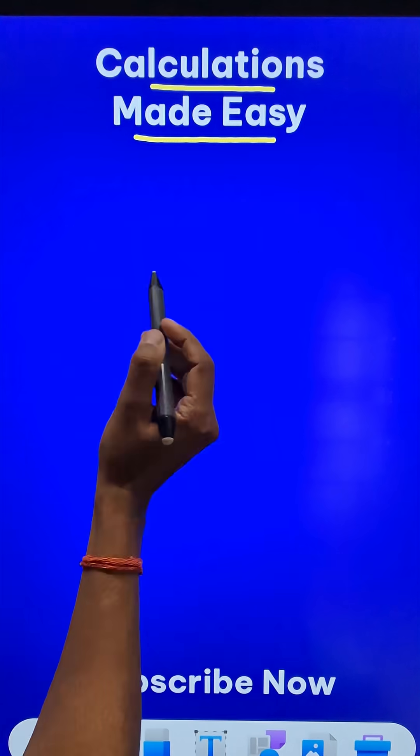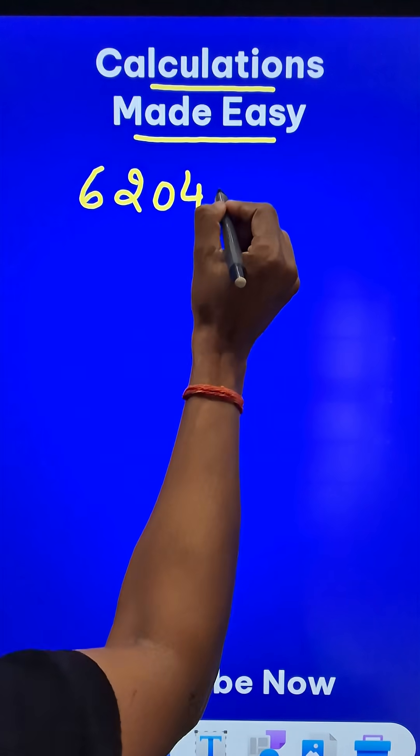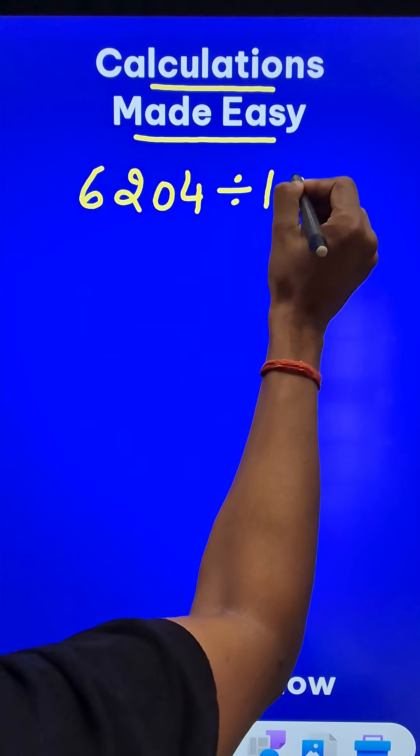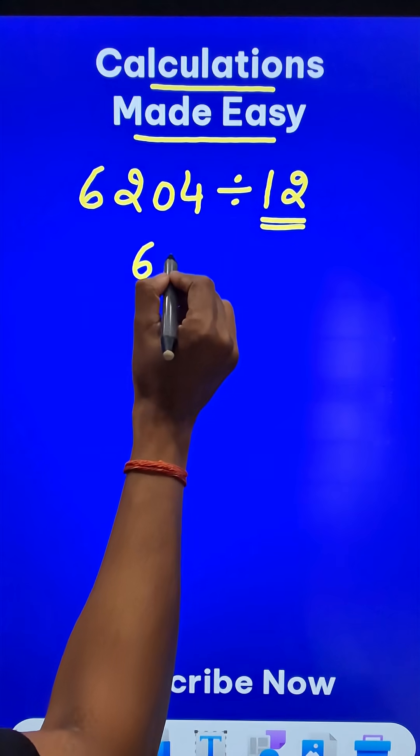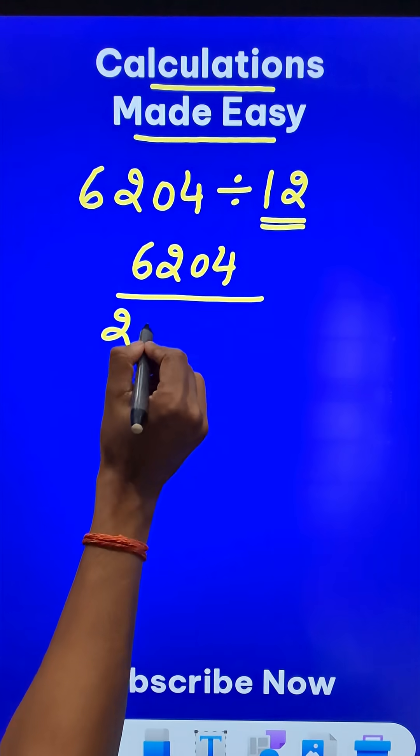Calculations made easy. Let us try and divide 6204 by a number like 12. What if you don't know the 12 times table? We can actually break this 12, the divisor, into its prime factors: 2 times 2 times 3.